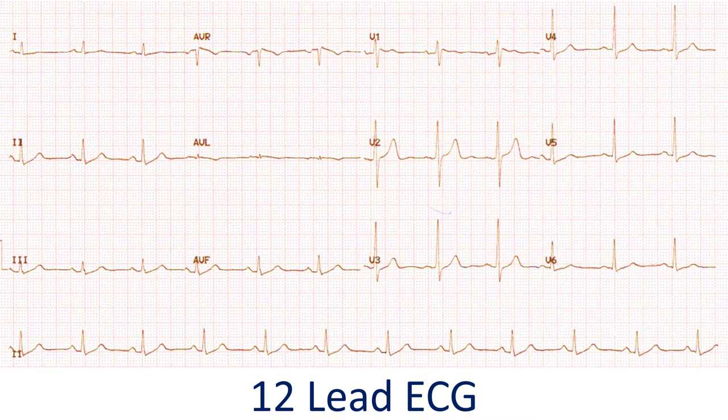The electrical system of the heart produces regular tiny electrical currents which travel throughout the heart in a systematic manner. When these currents are recorded from the surface of the body, it is called an ECG. The electrical currents synchronize the contractions of the various regions of the heart.